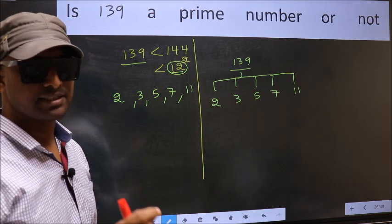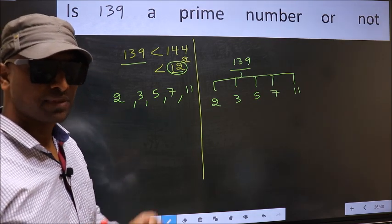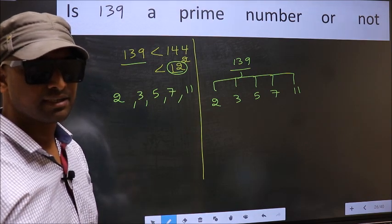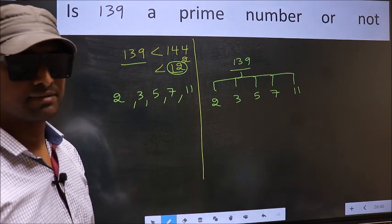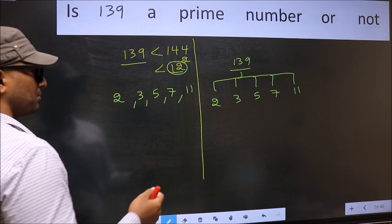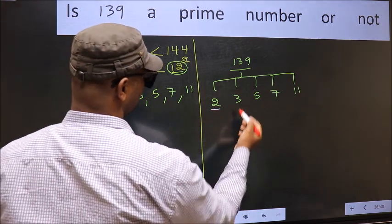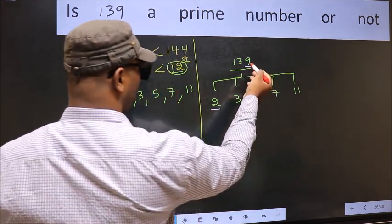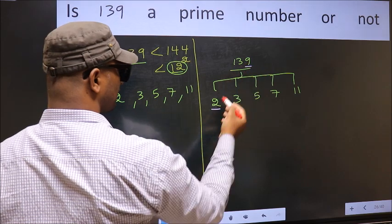Otherwise, it is a prime number. Did you understand the method? Let us check with the divisibility. Starting with 2, last digit 9 not even, so this is not divisible by 2.